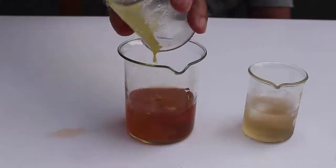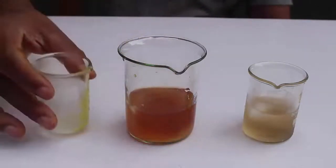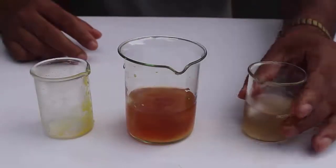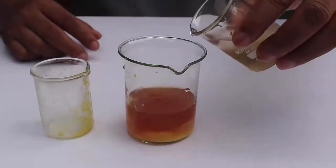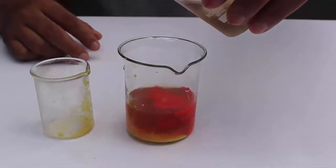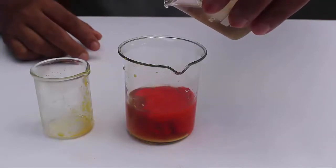Finally, in the end, pour the 2-naphthol solution in the big beaker. Now you will see a beautiful red colored precipitate.